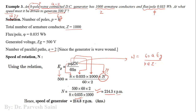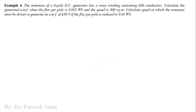So this DC generator with all these parameters, when rotating at 214.3 rpm, will generate an EMF of 500 volts. Let us take up one more numerical also related to the EMF equation of the DC machine.